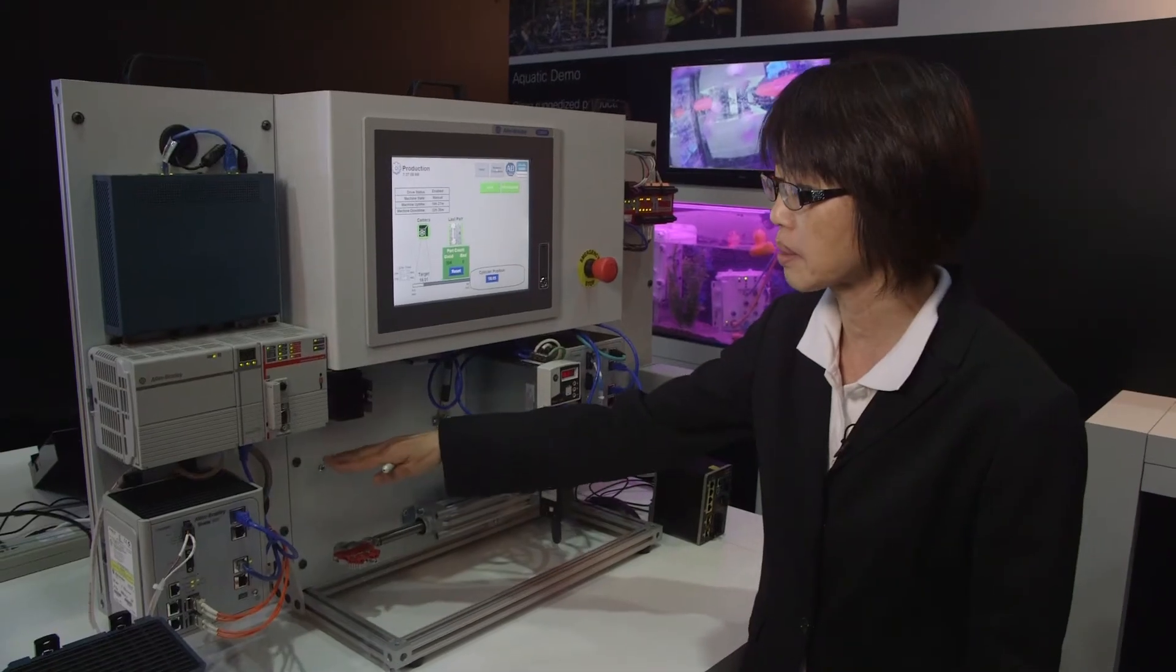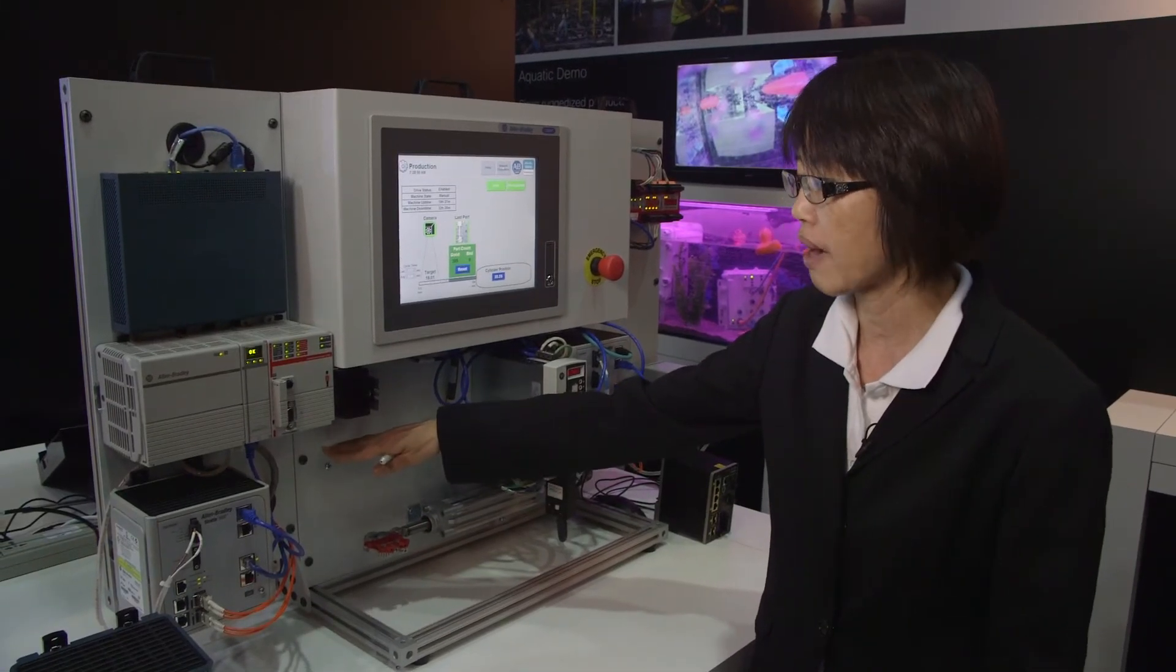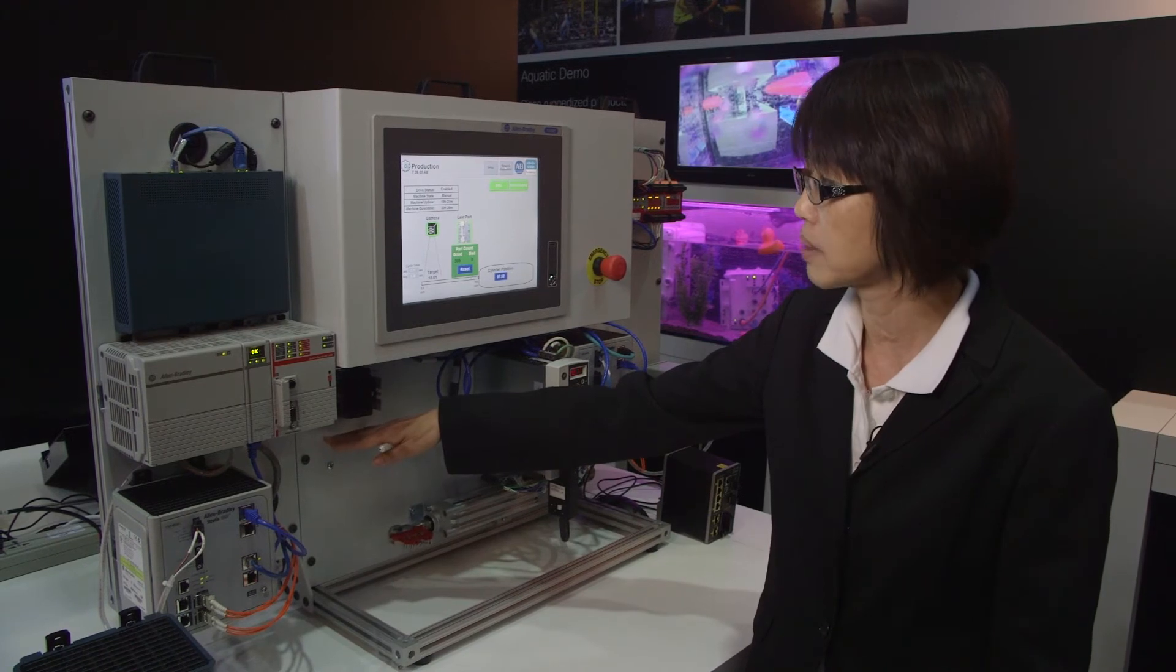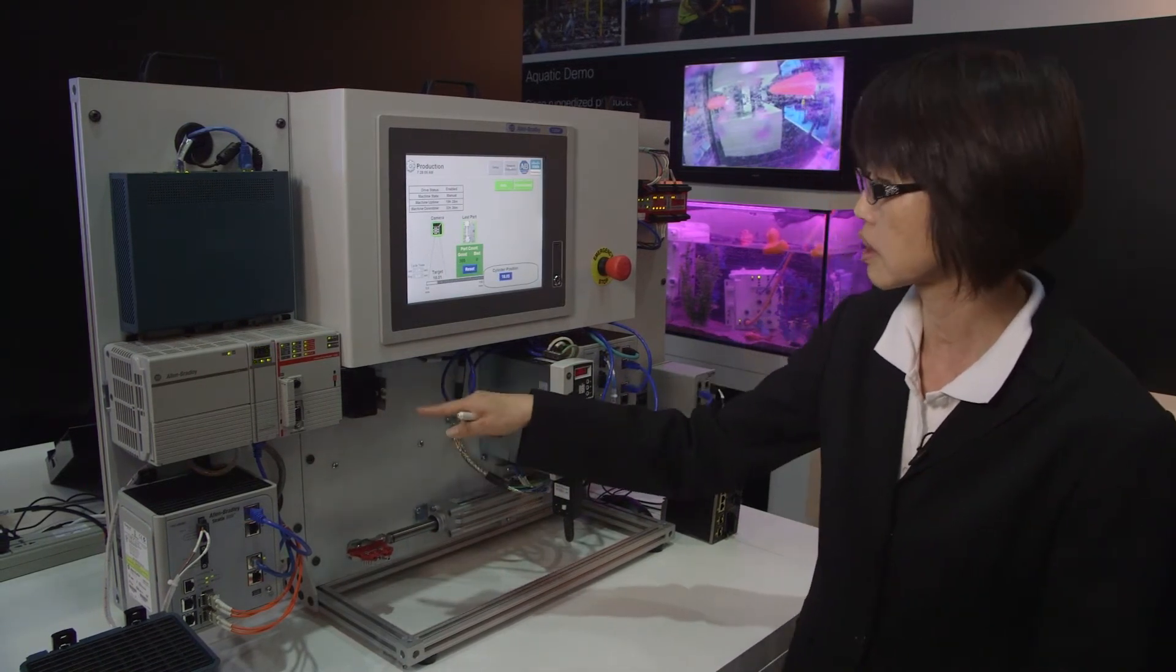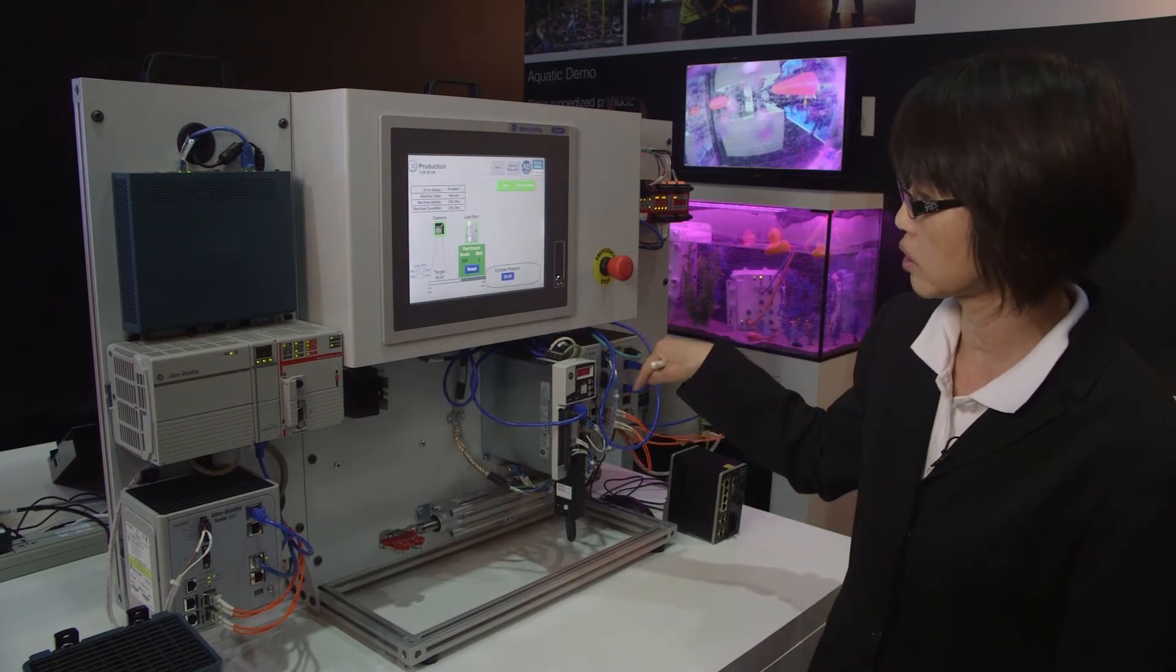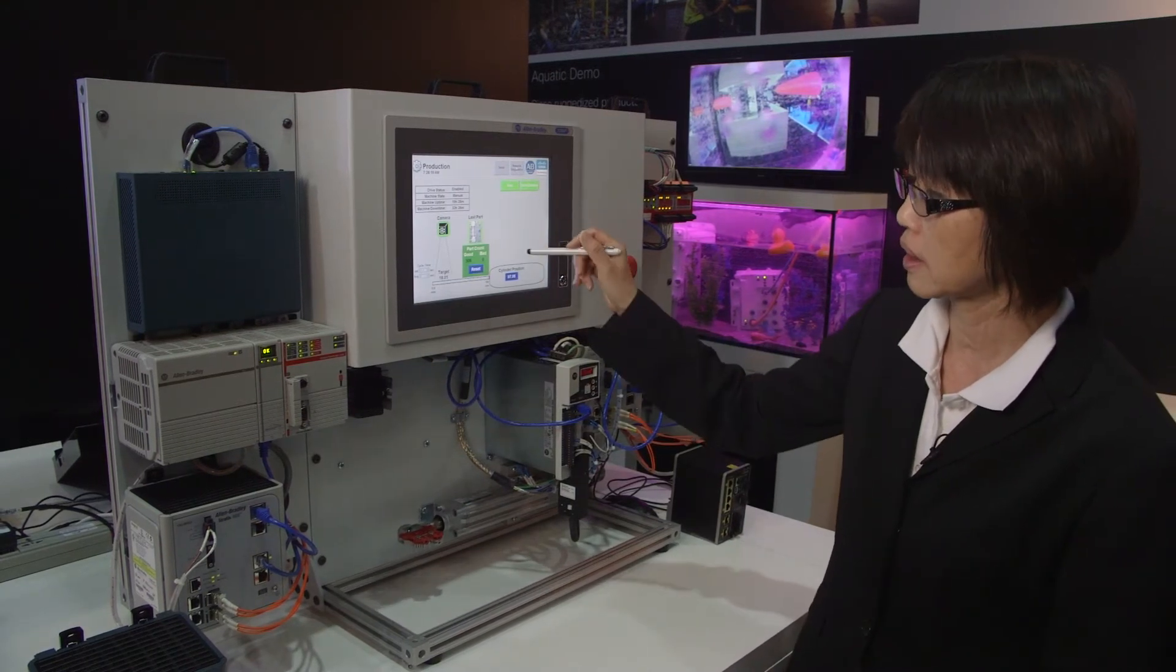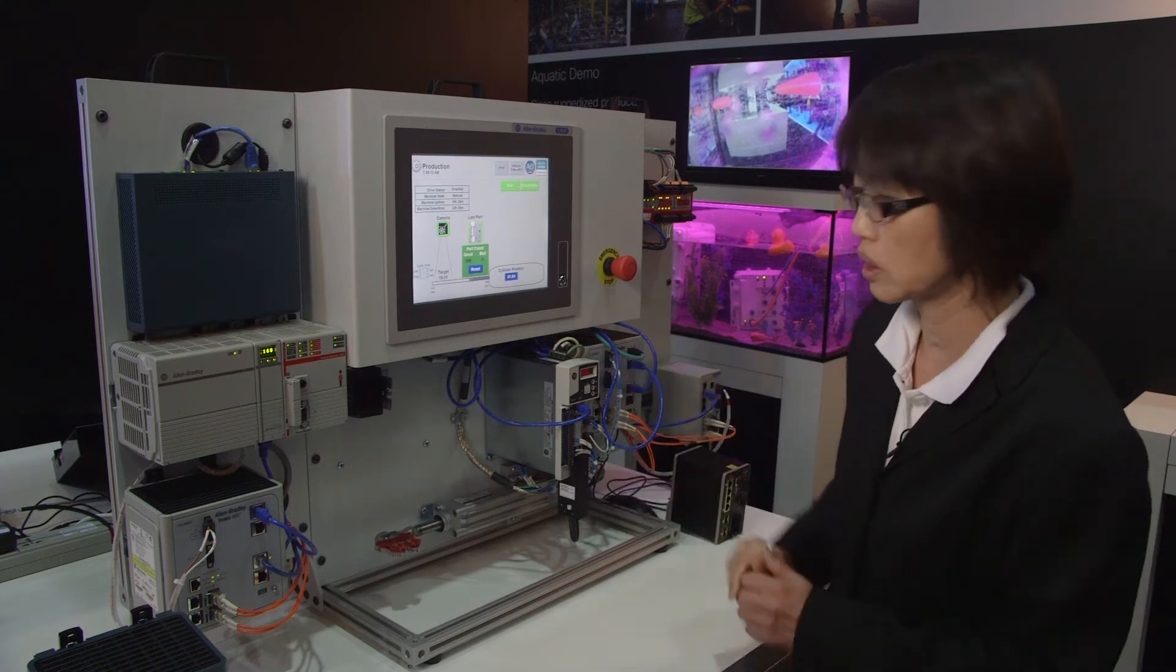If you put your hand here, after five seconds it will count as a bad part. This shows the camera controlled by the drive to inspect the production units.